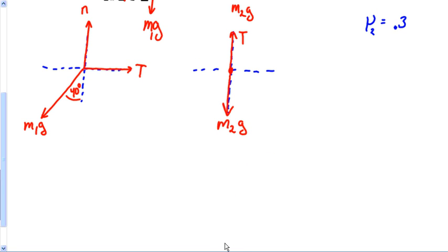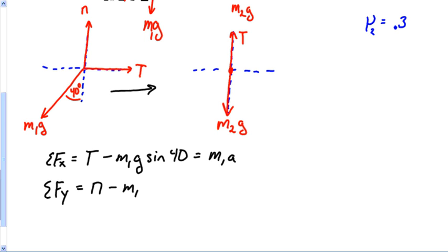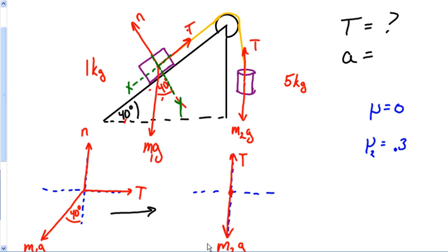The physics in this problem now would simply be us doing our sum of the forces. So our sum of the forces X for this guy would be T minus M1G. And normally it would be cosine, but we're off the Y axis. So I'm going to go sine of 40 equals, I'm going to write equals to M1A because it's moving in the X direction. My sum of the forces Y would be N minus M1G cosine of 40. And it's going to be equal to zero because it's not moving in the Y direction. This object isn't moving in or out of the plane. The object is moving up the plane.